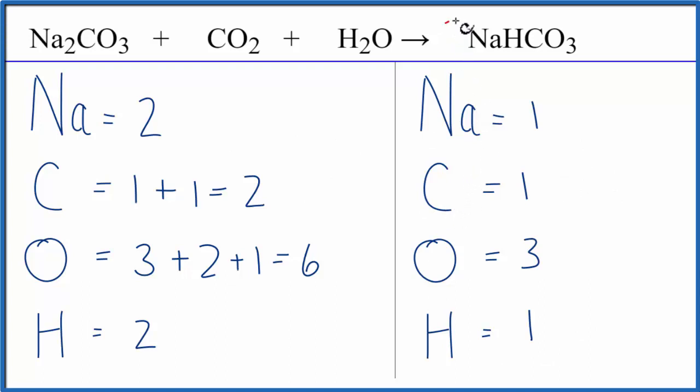We'll put a coefficient of two in front of the NaHCO3. So now we have one times two, that gives us two sodiums, and this two applies to everything here. So we have hydrogens, one times two, that gives us two hydrogens, those are balanced.